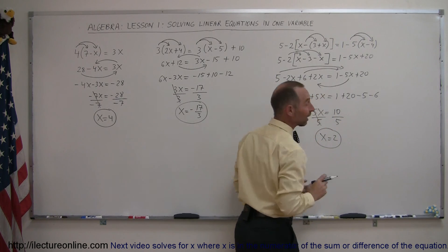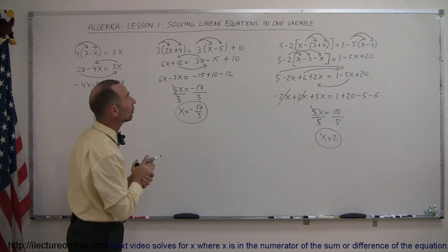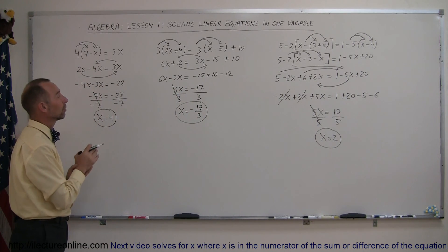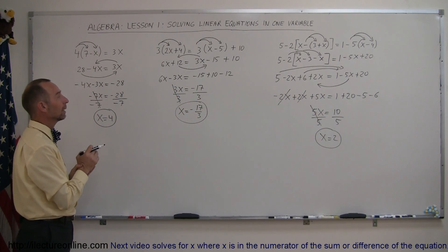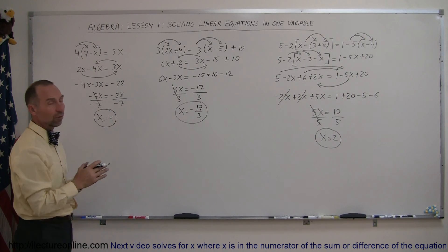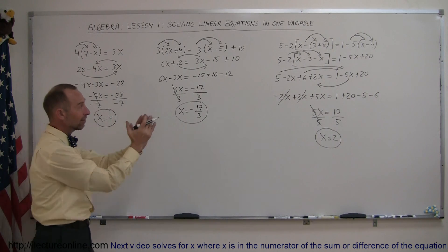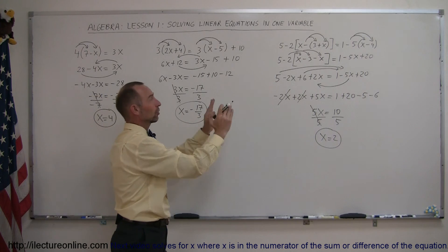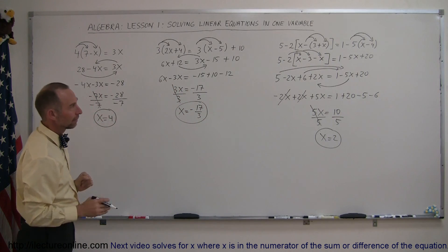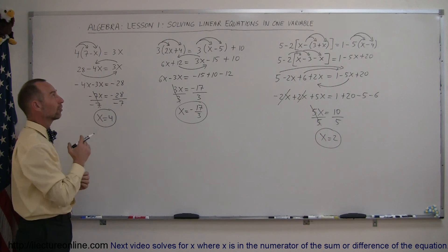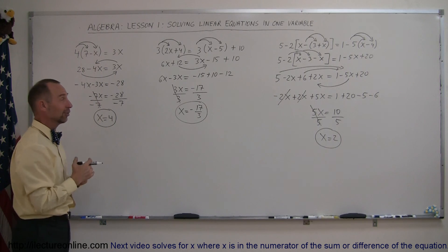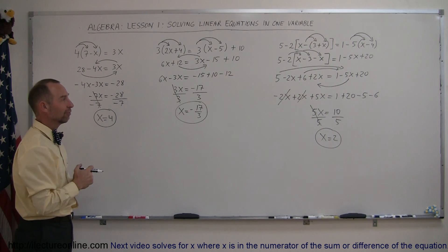And there you go — that's how you solve these linear problems to solve for one variable by getting rid of the parentheses first. And if you have a combination of them, work from the inside out: work the inside parentheses first, and then work the outside brackets next. I'll have some more examples of how to solve linear equations in one variable if you tune in to the next video.